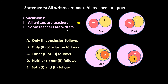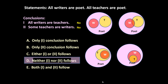Conclusion two: some teachers are writers. In the first figure, no teacher is a writer, so it does not follow there. In the second, third, and fourth figures, some teachers are writers — it follows. But since it doesn't satisfy the first Venn diagram, some teachers are writers does not follow either. So neither conclusion one nor conclusion two follows — option D is the right answer.